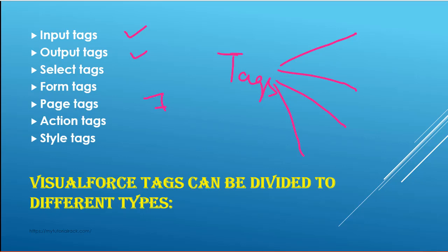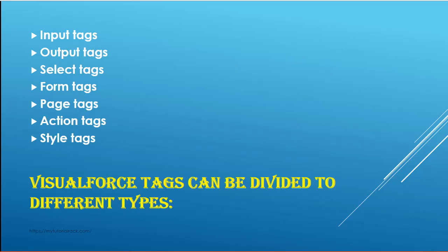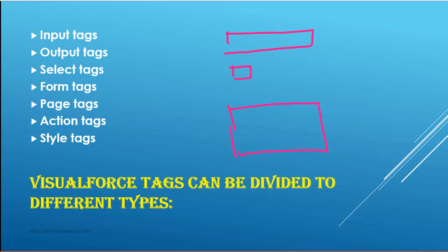So what are input tags? Input tags are basically used to get input from the user. For example, if you wanted to ask the user for his name, you need a text box where the user can enter his name. Or if you wanted to ask whether the user is a US citizen, it might be a checkbox — yes or no. Similarly, if you want the user to upload a cover letter, you need a large text area field. So anything to do with getting input from the user is categorized into input tags.